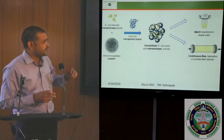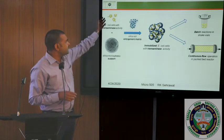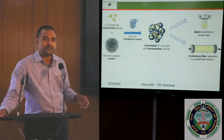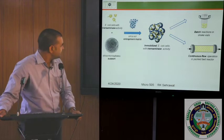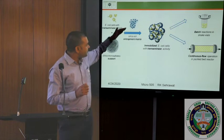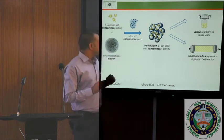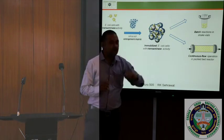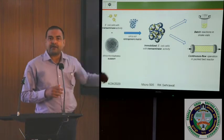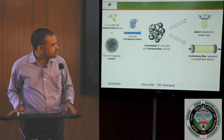An example of entrapment in a matrix: E. coli cells exhibiting transaminase activity (transaminase is used for production of amino acids) are mixed with silica microspheres to form a silica solution, and the E. coli cells are entrapped in the silica material. These can then be used in a batch reactor (using shake vials) or a continuous flow packed bed reactor.